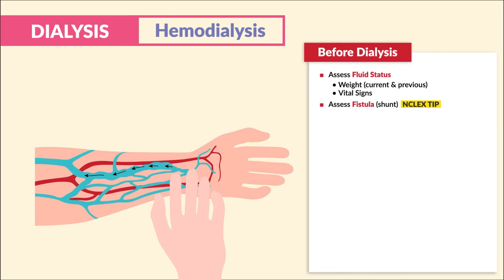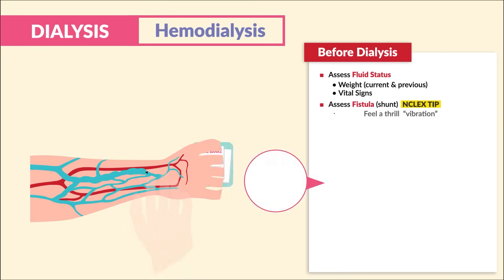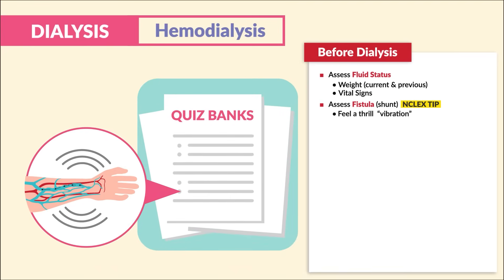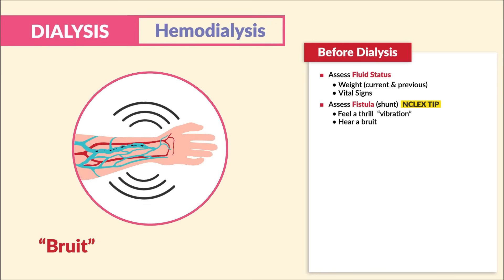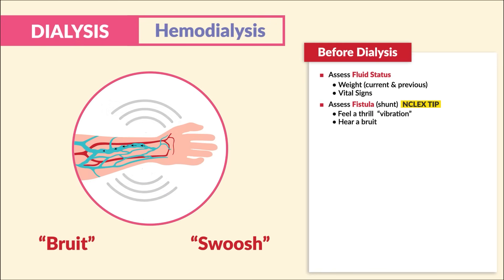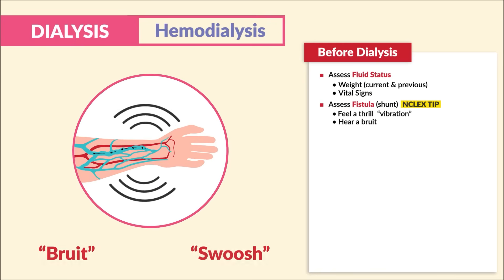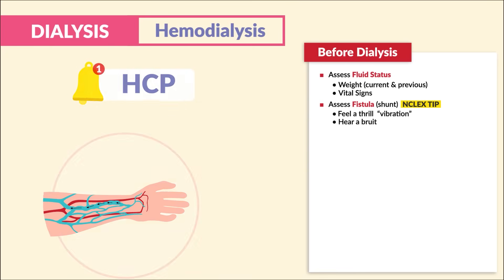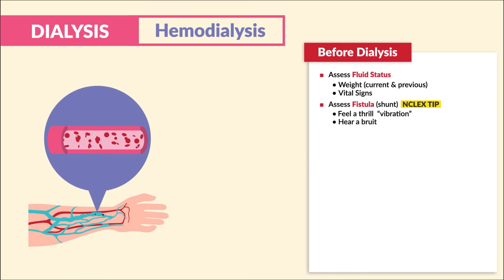In terms of assessing the fistula — the shunt — huge NCLEX tip, write this down. You have to always feel a thrill, or vibration on some question banks, and hear a bruit, or a swoosh. Just remember: feel a thrill, hear a bruit. If these are not present, we have to report to the HCP immediately. This could mean that there's a clot formation in the fistula — decreased blood flow — and the client can lose their arm.